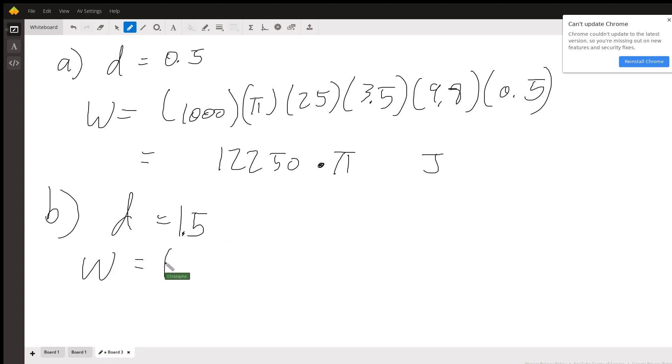Plug in all your numbers again, it's in fact going to be the exact same, so copy and paste, and then drag it down, just the same numbers except now you got here a 1.5. So I can check all of that, you can get a slightly bigger number of the 36750 π amount of joules.